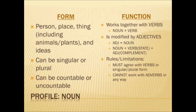Nouns can be singular or plural. They can be countable or uncountable. Their general relationships: they do work with verbs, and they can be modified by adjectives. But there are rules and limitations. For example, when they work with verbs, they must agree — when a noun is singular, the verb must reflect that singular form; when nouns are plural, verbs must also recognize that they're plural. Another limitation discussed in last week's video is that nouns cannot work with adverbs in any way.